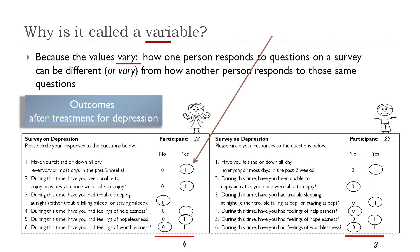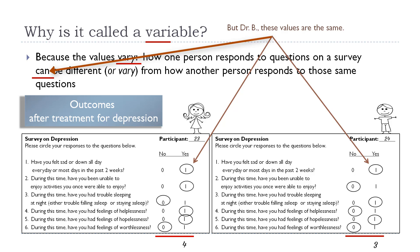You might notice that both Josephine and Jose answered yes to question one, and you might wonder: aren't those values the same? Yes, they can be the same — the key word is 'can be different.' It doesn't mean they will be different. Jose and Josephine could have answered every question the same exact way and gotten the same score — they could be equally depressed. But they also could not. The fact that these values can vary is why we call it a variable.